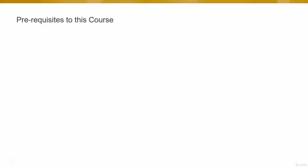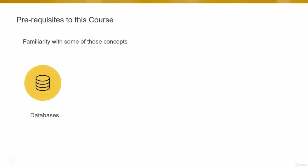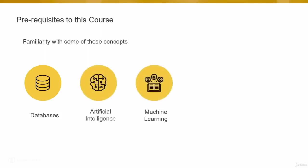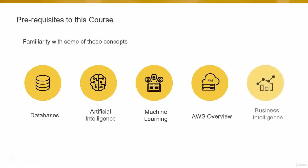Before going through the course, it will be helpful if you have familiarity with some concepts like what are databases, what is artificial intelligence, what is machine learning, an overview of AWS, and what is business intelligence and how it helps in making critical business decisions. Though I'll be covering the overview of each topic, a prior basic understanding of these topics will be helpful.